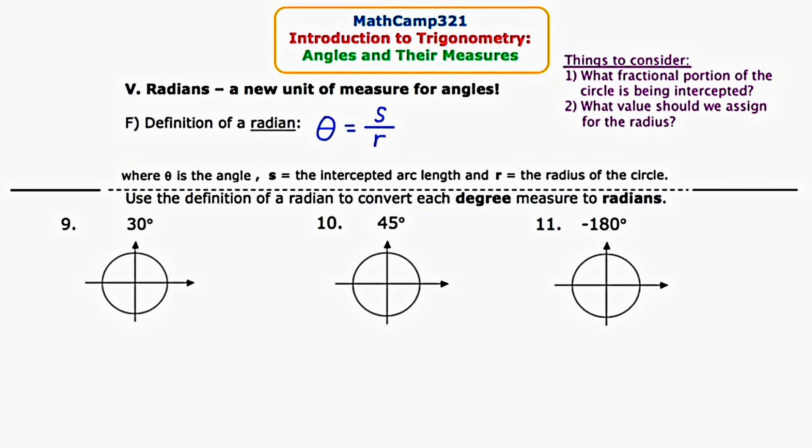In questions number 9, 10, and 11, they give us a certain degree measure, and they want us to convert it into radians. Starting with number 9, they want us to convert 30 degrees into radians. The first thing that I'm going to do is draw a 30 degree angle in standard position.